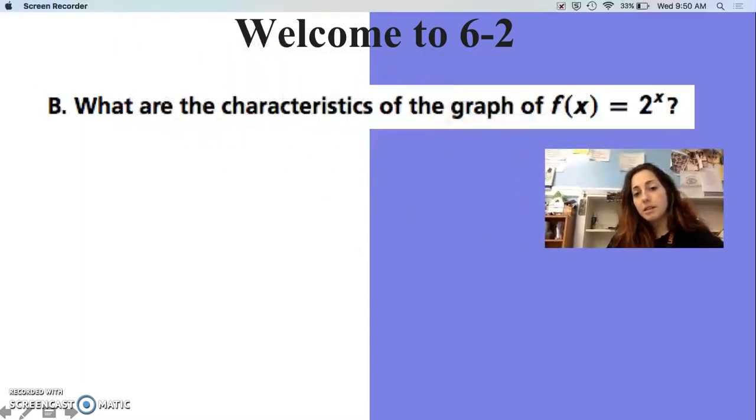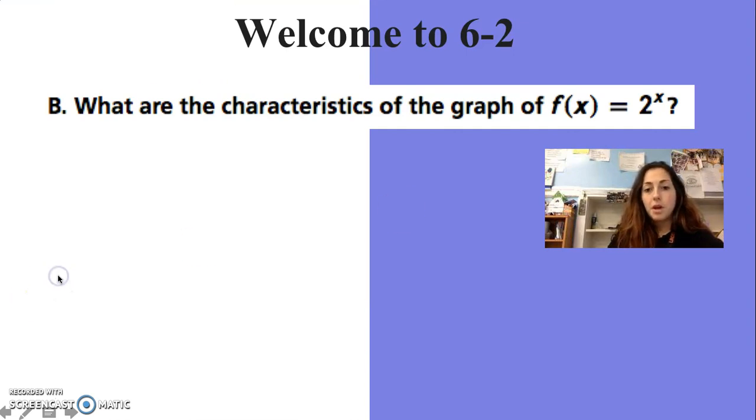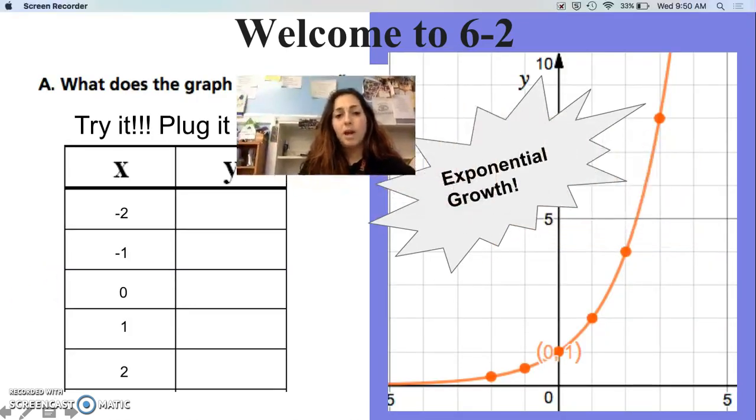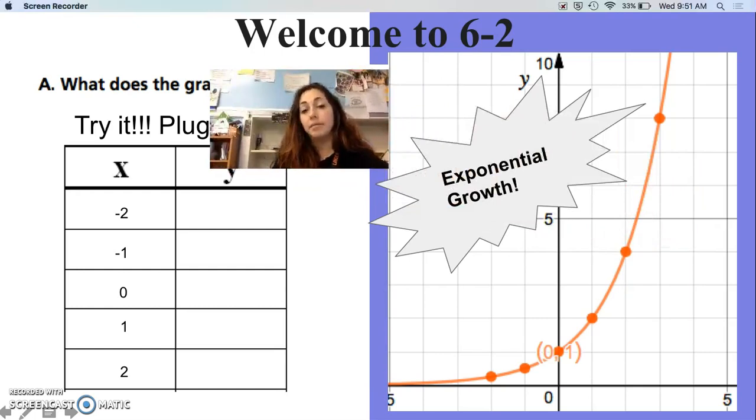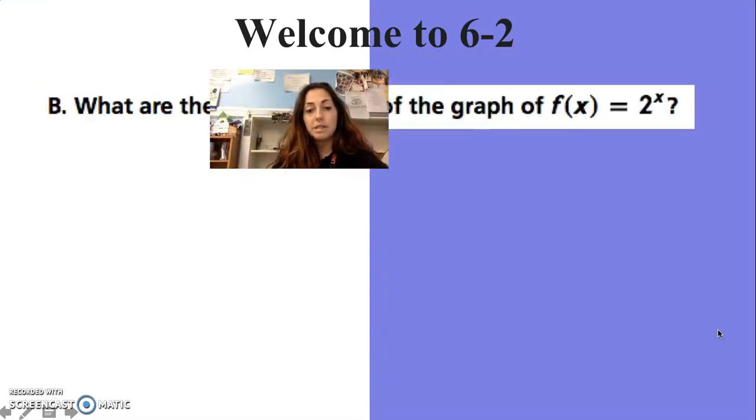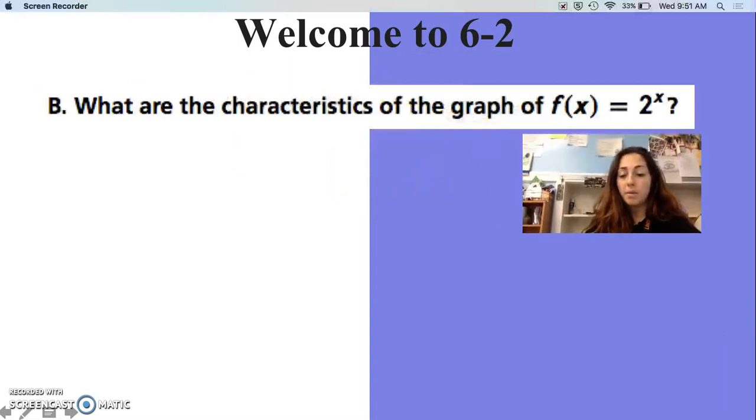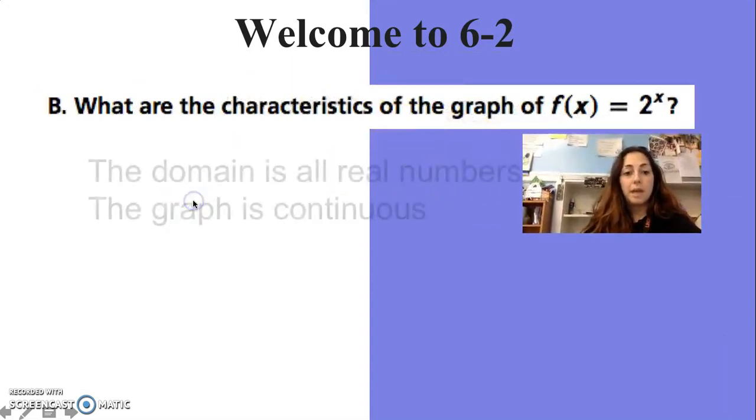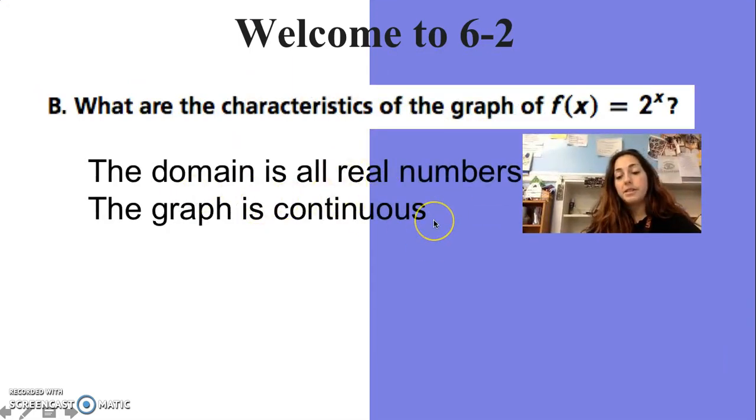Let's talk about some of the characteristics that we just noticed. The domain - what x values am I allowed to plug in? All of them. So it's all real numbers. The graph goes on forever, so it's continuous. These are some of the characteristics that I want to talk about.